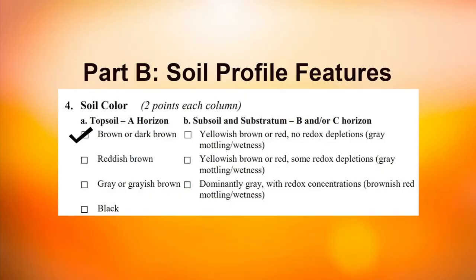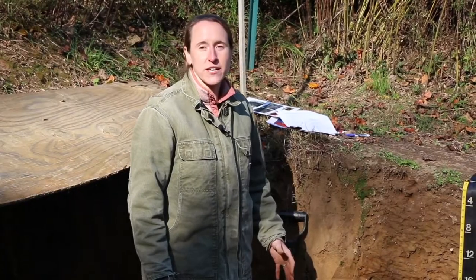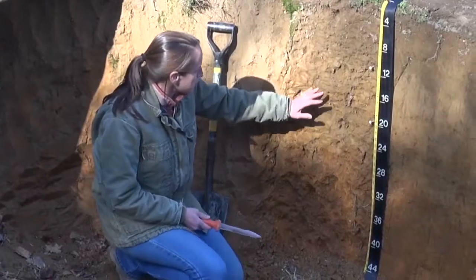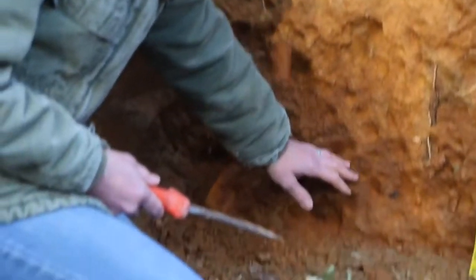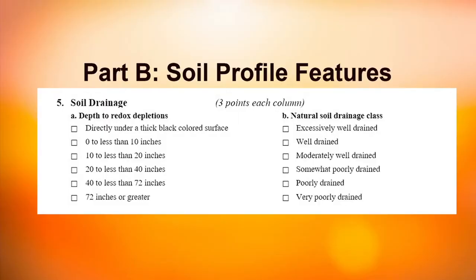Since the soil is dominantly yellowish brown or red with depletions, we would check the second answer. Question five is about soil drainage. Drainage class refers to where we see that seasonally high water table. In this soil, we don't see any really gray depletions until we get to the very bottom, below 40 inches. For that question, you're looking at what depth depletions come in at — in this soil, it's between 40 and 72 inches.